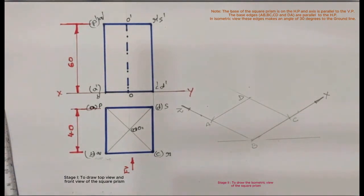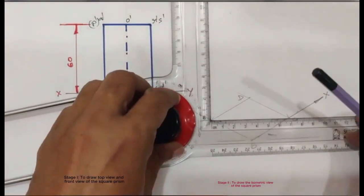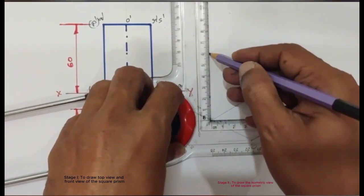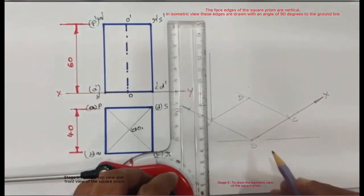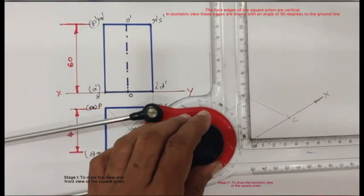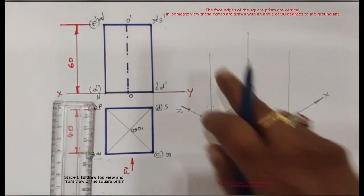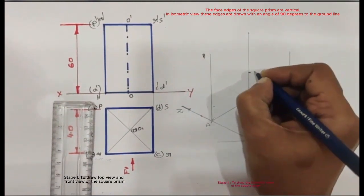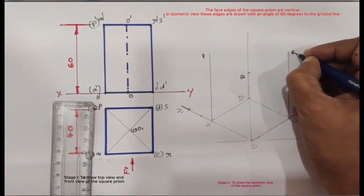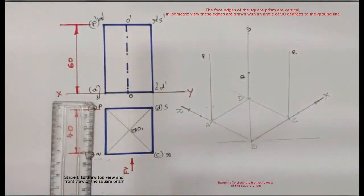In isometric views, horizontal lines are drawn at an angle of 30 degrees to the ground line, and vertical lines are drawn at 90 degrees to the ground line. The method being used for drawing the isometric view of the square prism is the box method. Passing through A, B, C, and D with the given axis height of 60 mm, draw vertical lines. After that, name the top points as P, Q, R, and S. Join PQ, QR, RS, and SP with continuous dark lines.